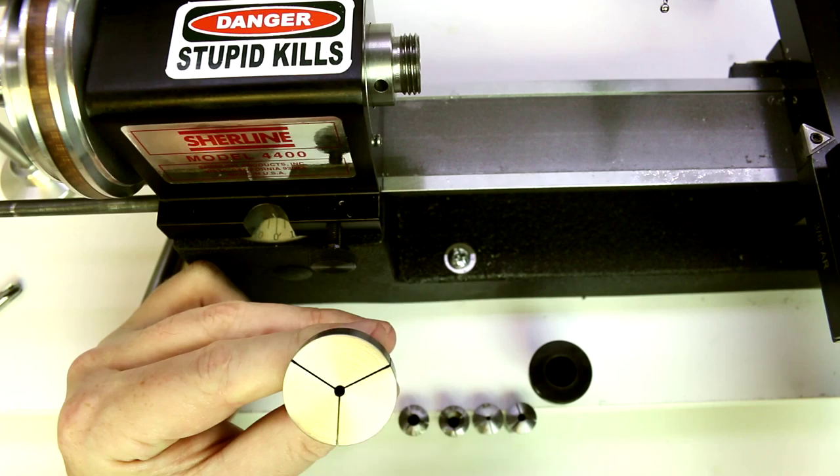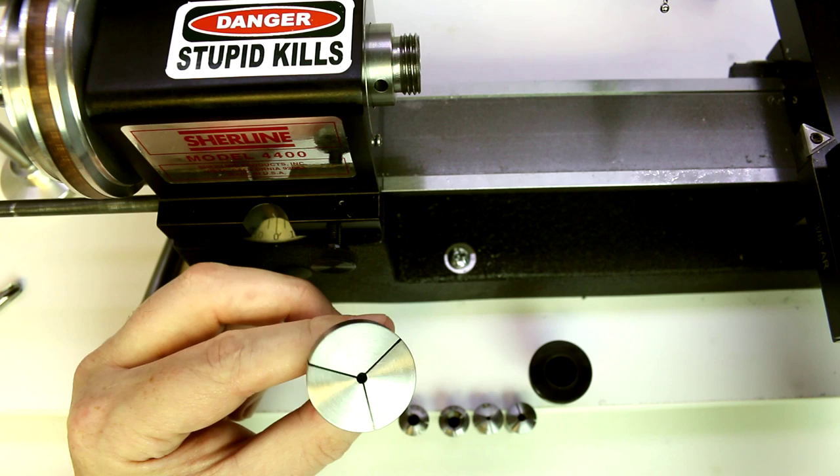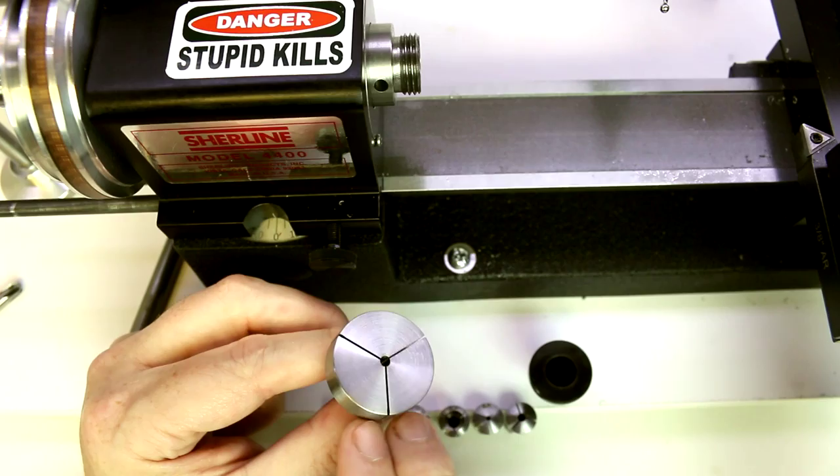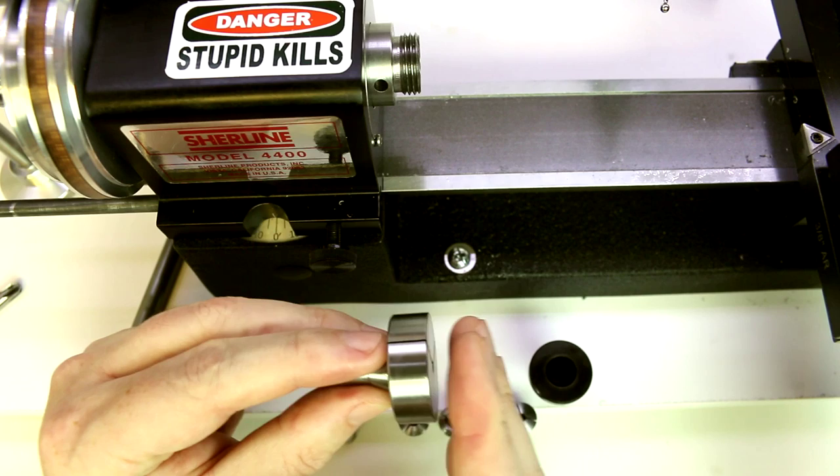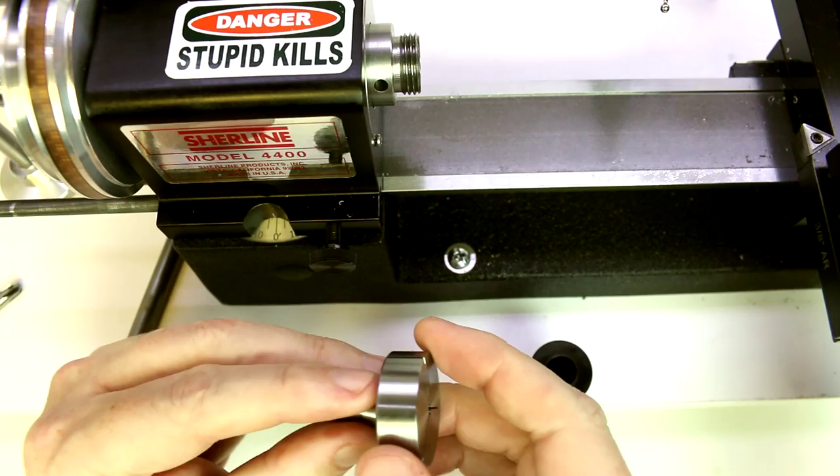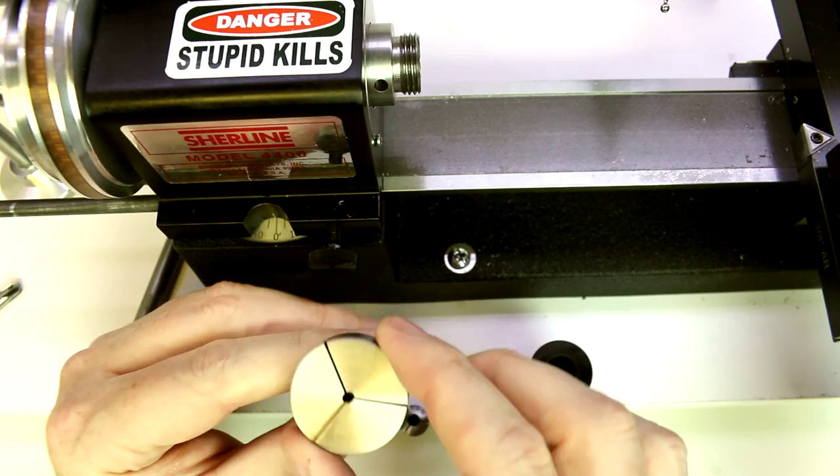These come in three different sizes. This one is 1.25 inches, so you should be able to hold up to 1 inch diameter pieces in this. Now you won't have a whole lot of gripping surface on the depth, so this would be really for small or flat pieces, say like flywheels or small gears or items like that that you're trying to hold around the outside diameter or outside circumference in a very secure manner.